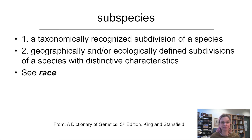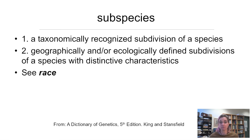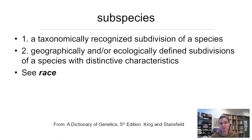Let's see subspecies. Subspecies: a taxonomically recognized subdivision of a species — geographically and/or ecologically defined subdivisions of a species with distinctive characteristics. See race. So race and subspecies are two terms that mean the same thing. These days, biologists don't much use the term race — it carries so much meaning outside of biology that it has fallen out of favor. Subspecies is the term we use to designate the distinct populations within a polytypic species.